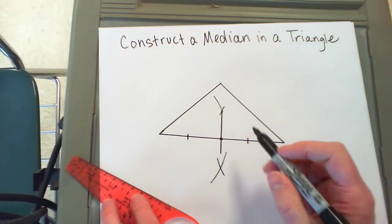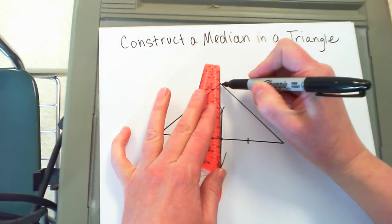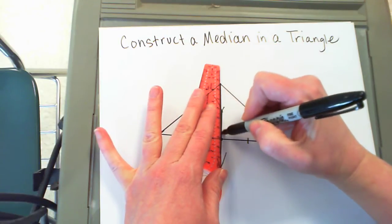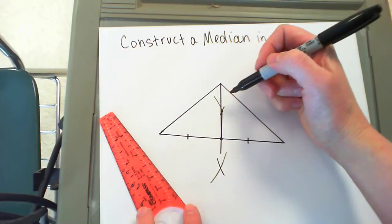To draw in the median, you connect the midpoint to the opposite vertex, vertex to that midpoint. In this case it almost is the perpendicular bisector but not quite.